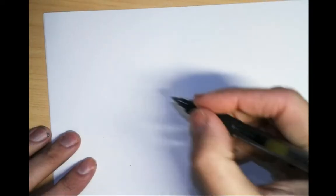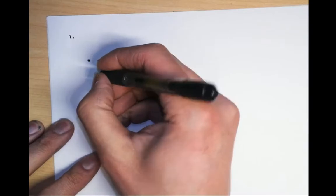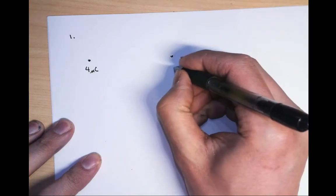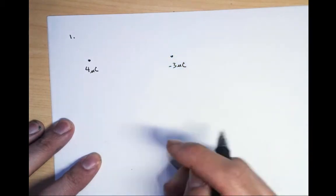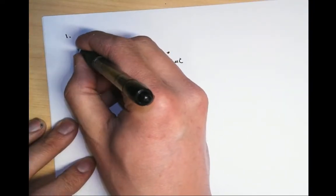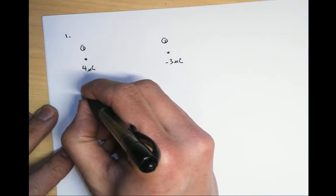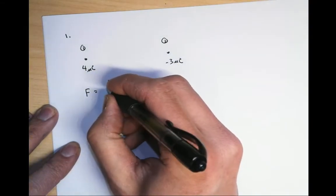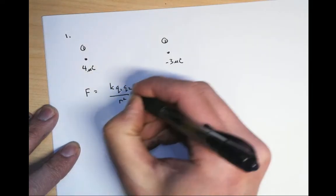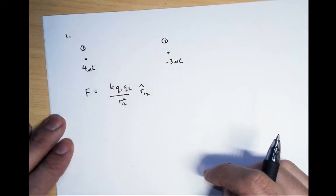So I have basically two charges. This one is at four microcoulombs and this one is at minus three microcoulombs. Consider the force basically between the charges. I'm going to consider the force on number one first and number two second. The force from Coulomb's law is k·q1·q2 over r squared, times r̂₁₂. That's basically the force here.